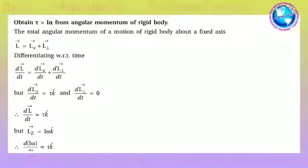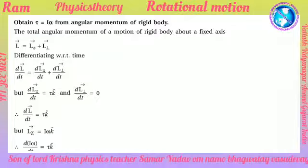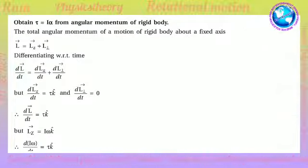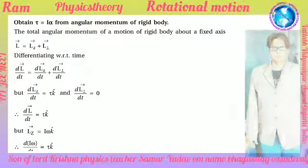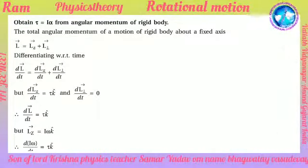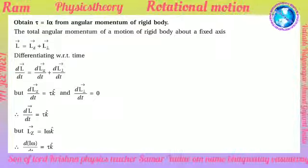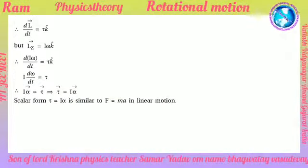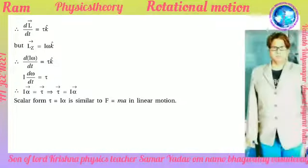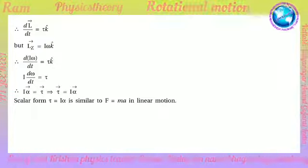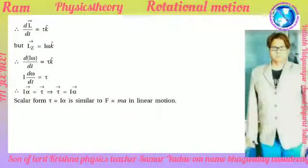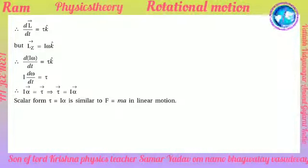Deriving tau = I*alpha from angular momentum of a rigid body. Total angular momentum L = Lz + L_perp. Differentiating with respect to time: dL/dt = dLz/dt + dL_perp/dt. Since dLz/dt = tau*k-hat and dL_perp/dt = 0, we get d(I*omega)/dt = tau, therefore I*(d_omega/dt) = tau, hence I*alpha = tau. The scalar form tau = I*alpha is similar to F = ma in linear motion.